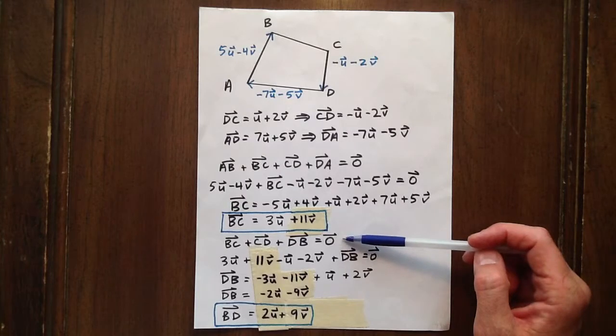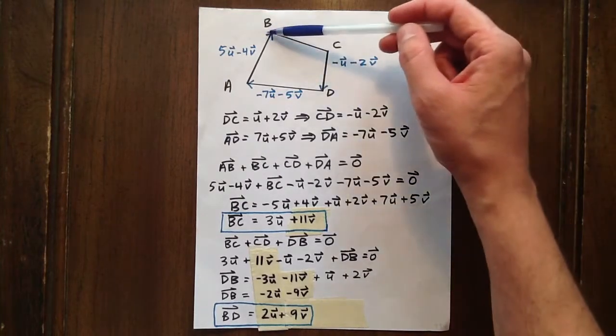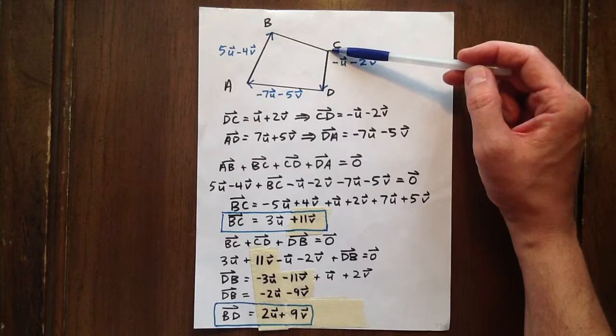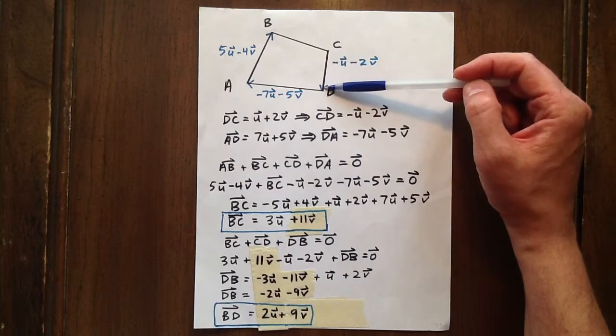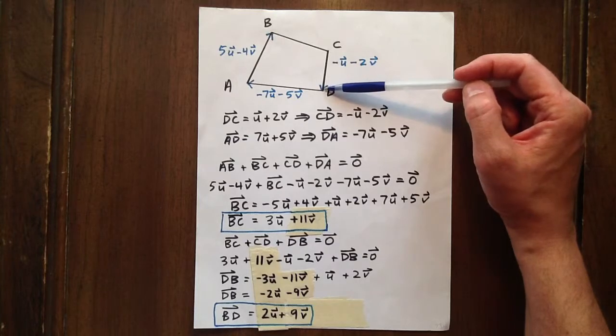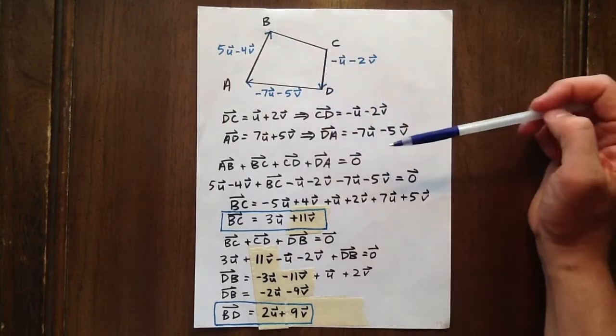So using the second method, we see BC is 3U plus 11V plus CD is negative U minus 2V plus DB is equal to zero.